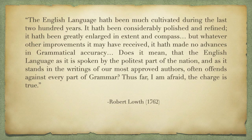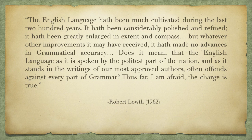To get a sense of what universal grammar meant to someone like Lowth in the 18th century, consider this quote. He writes: 'The English language hath been much cultivated during the last 200 years. It hath been considerably polished and refined. It hath been greatly enlarged in extent and compass.' Here you can imagine he has in mind all the vocabulary that was added, as we talked about in an earlier presentation. But he goes on: 'Whatever other improvements it may have received, it hath made no advances in grammatical accuracy.' He concludes: 'The English language, as it is spoken by the politest part of the nation and as it stands in the writings of our most approved authors, often offends against every part of grammar — thus far, I am afraid, the charge is true.'